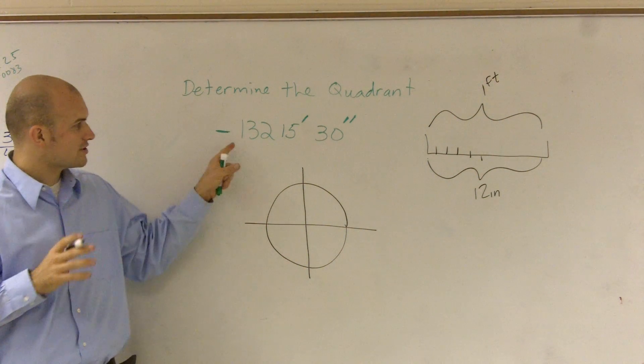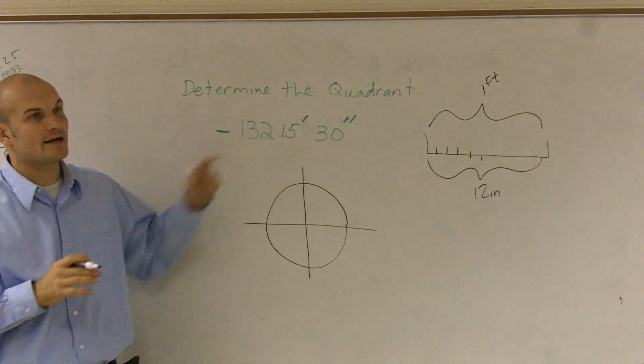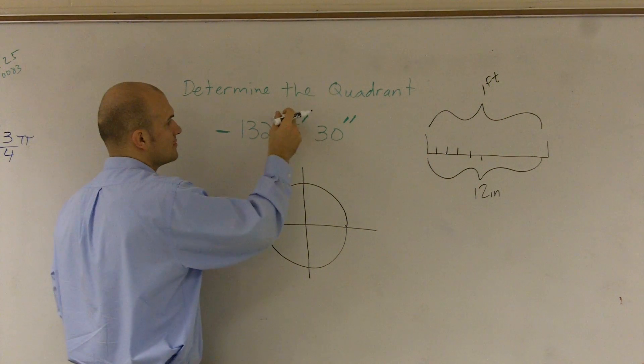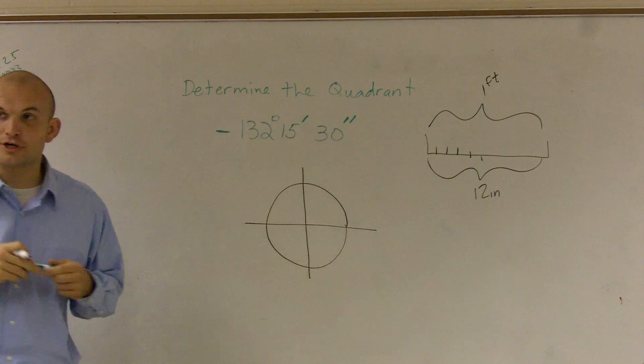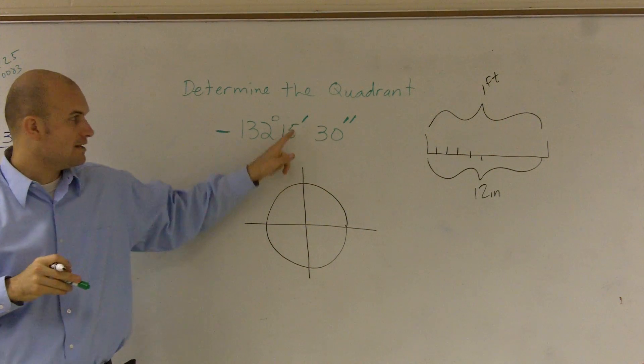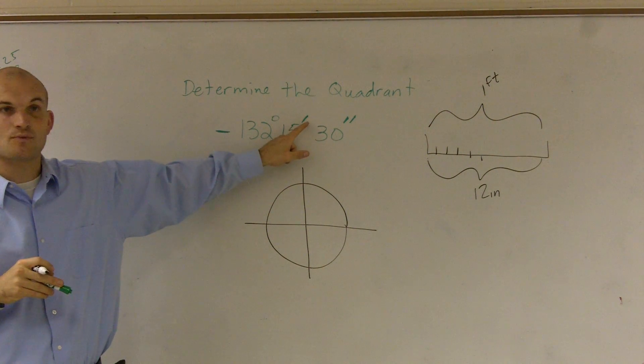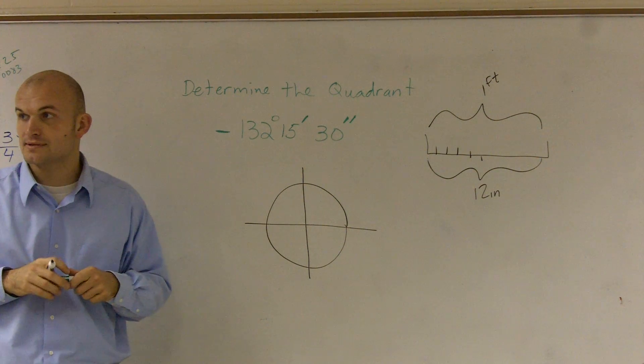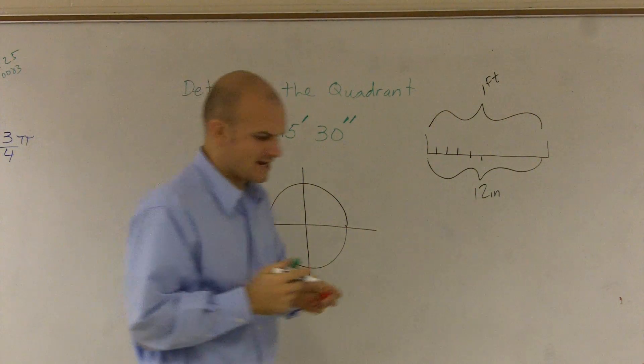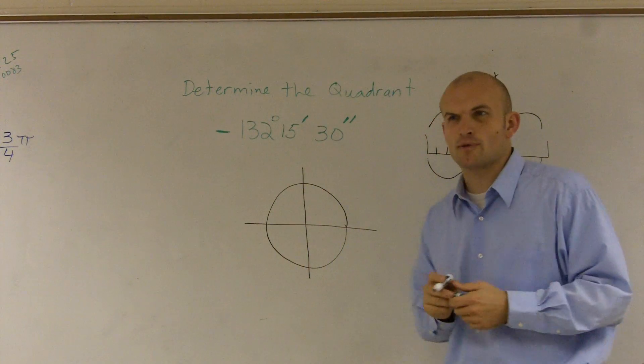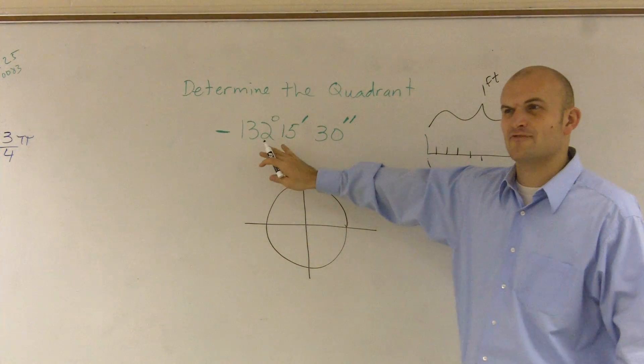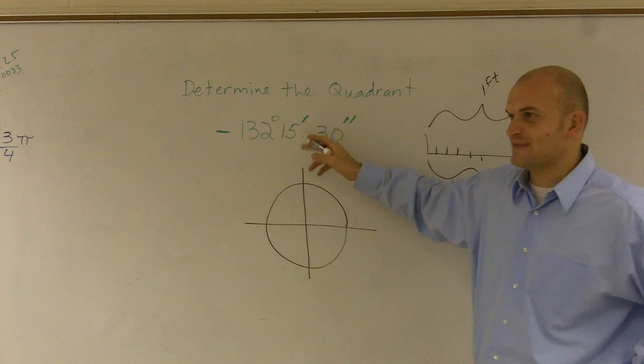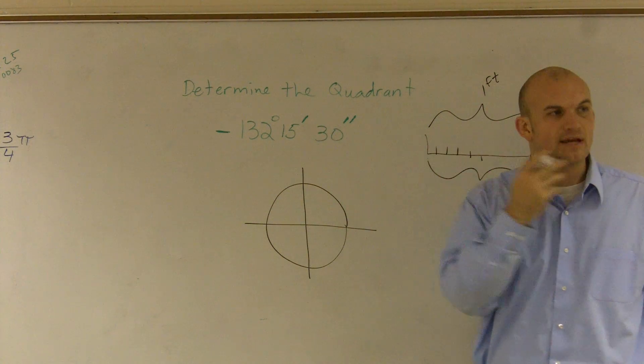The way I want you guys to look at it, this is an angle right here. This is negative 132 degrees, 15 minutes, and 30 seconds. Now, how can I write that in decimal form? Because this is kind of an odd form. I don't really know where to plot that. I don't know what 15 minutes and 30 seconds are. Think about it this way.